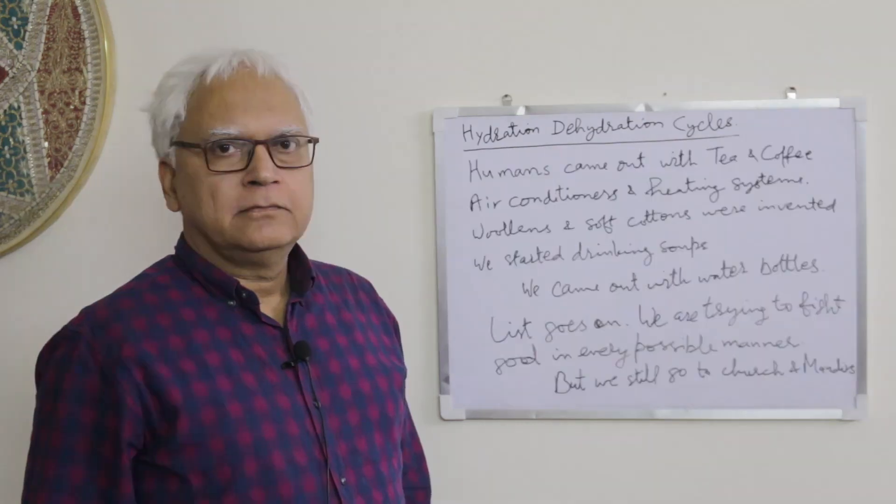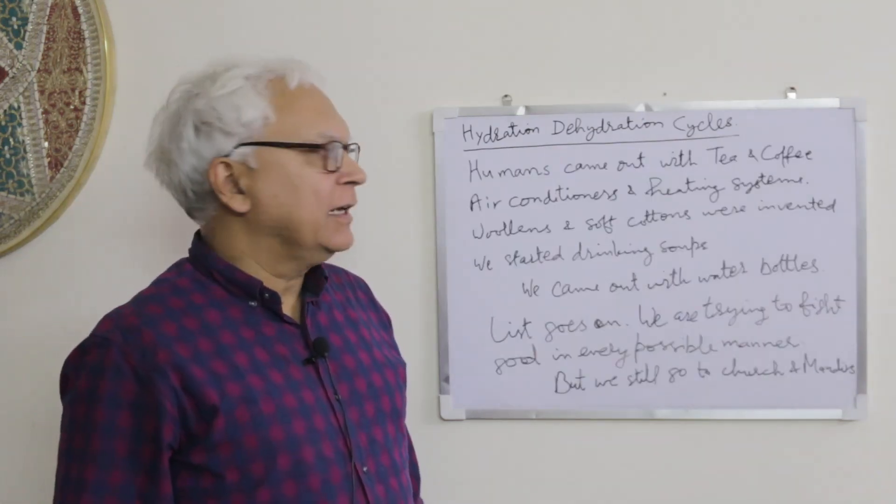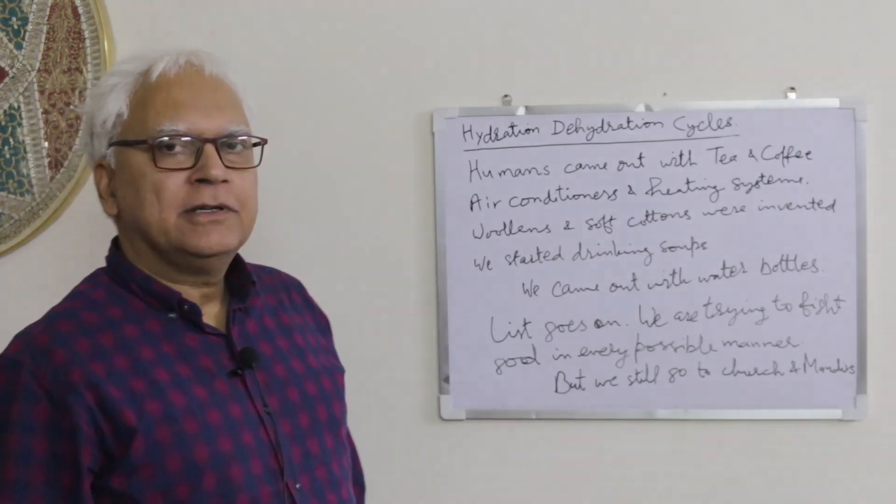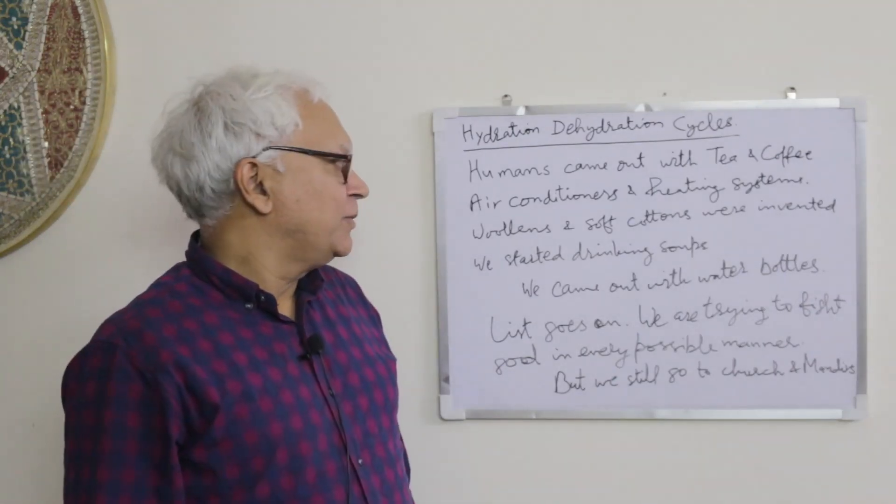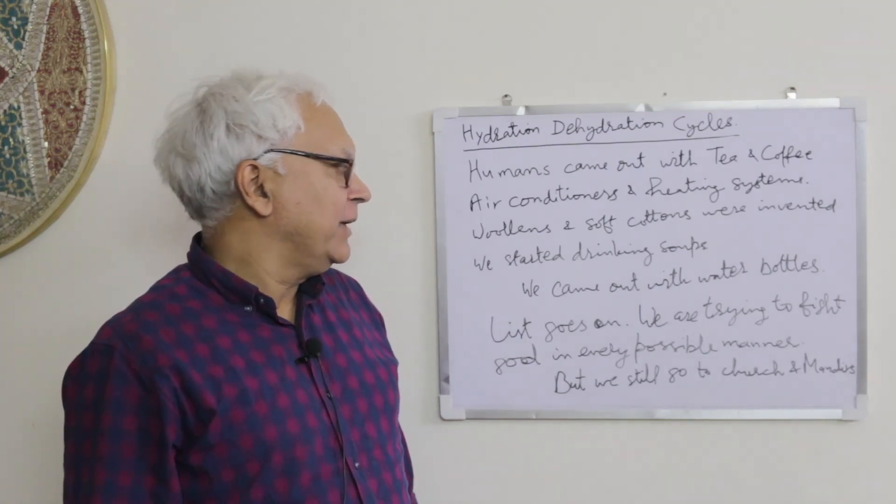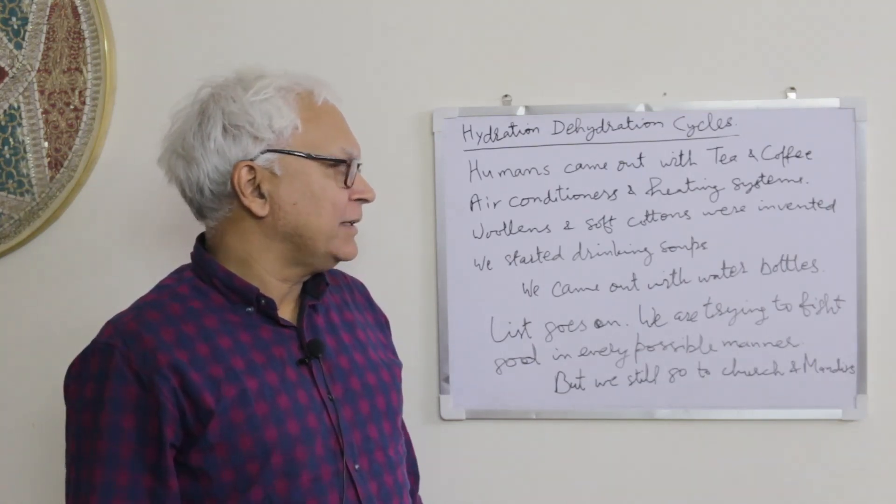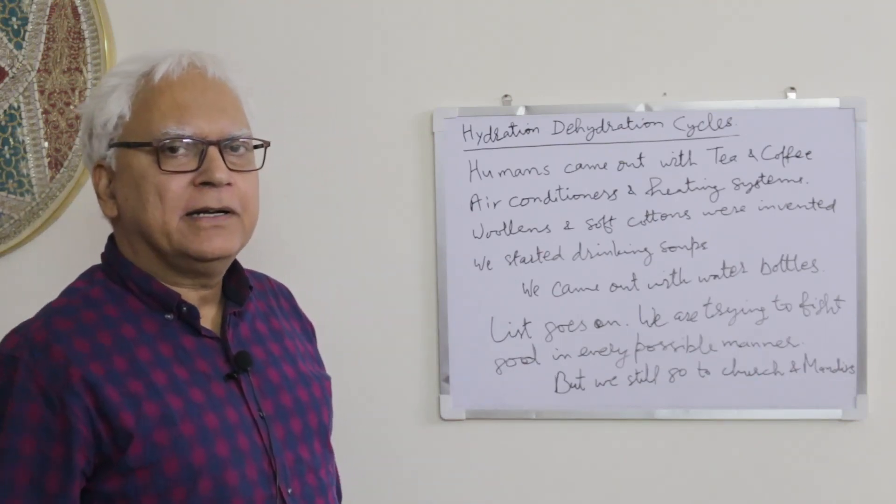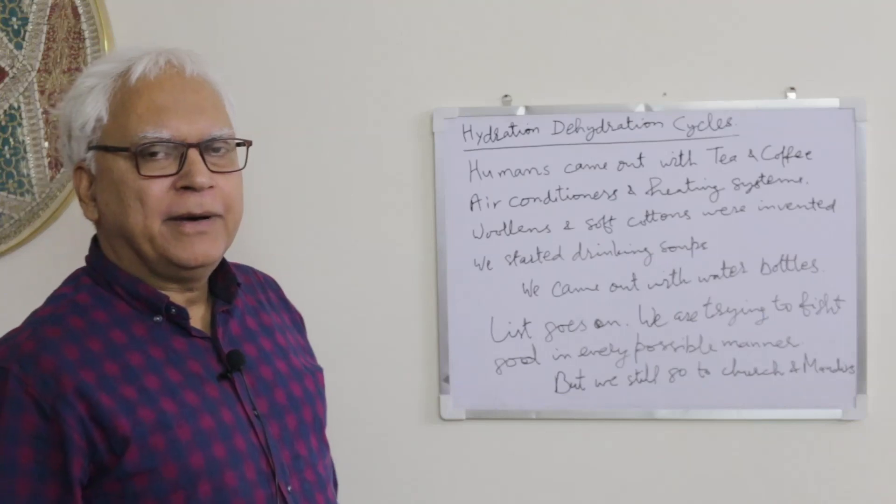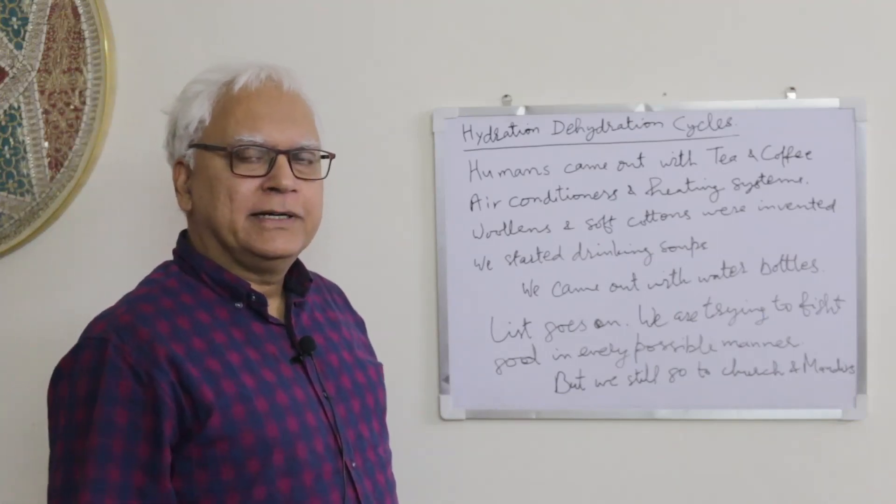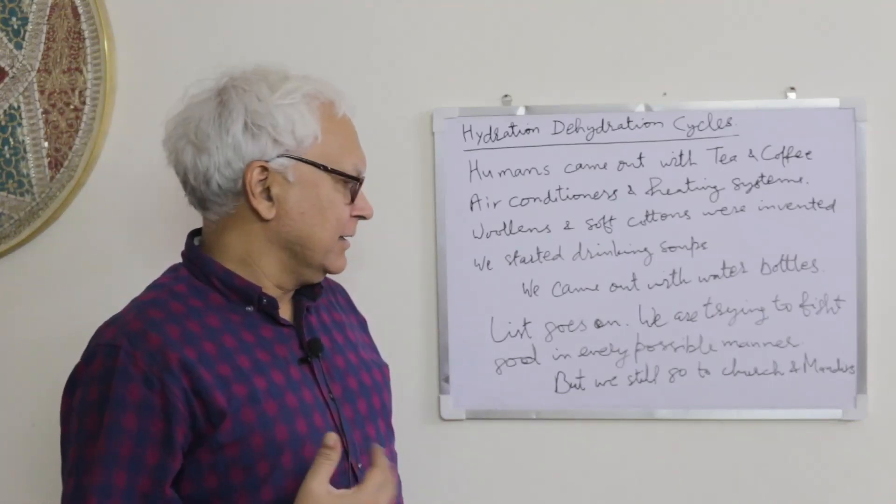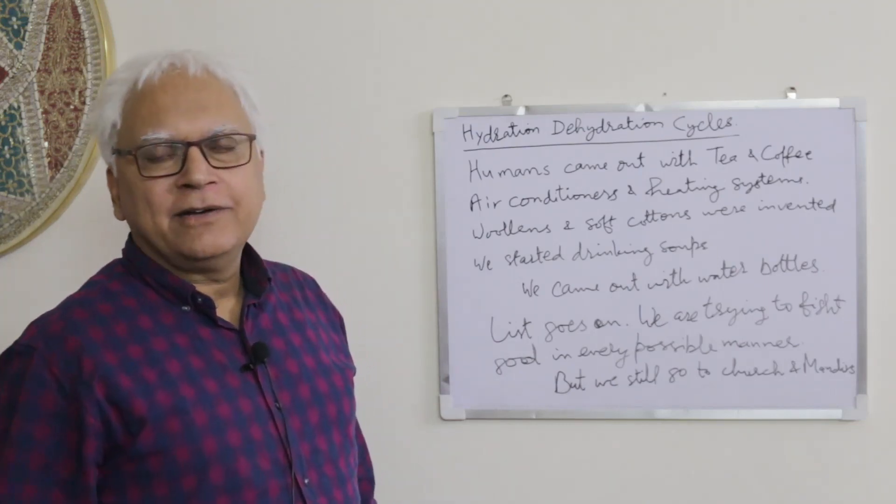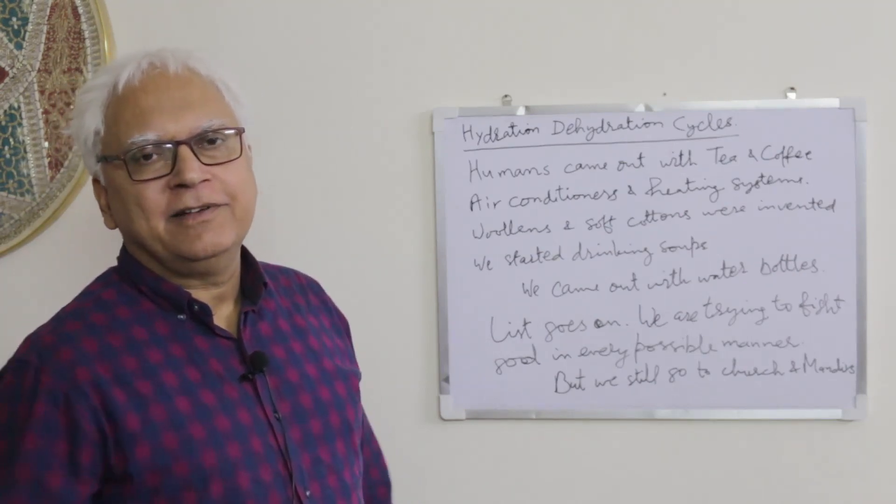So the people who are not so good at understanding things, God tried to force us to be healthy, but we don't take directions from the God. So now humans came out with tea and coffee, air conditioners and heating systems, cold drinks, soups, woolens and soft cottons were invented too. And we started drinking more soups and more fluids. Every other day there will be a new beverage in the market and there were a lot of alcohol drinks to keep ourselves in senses.